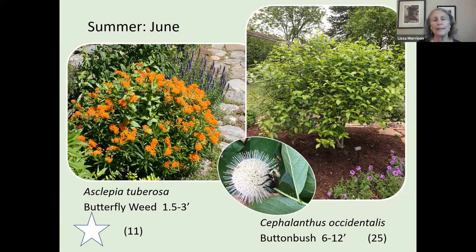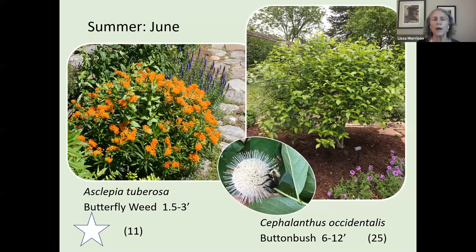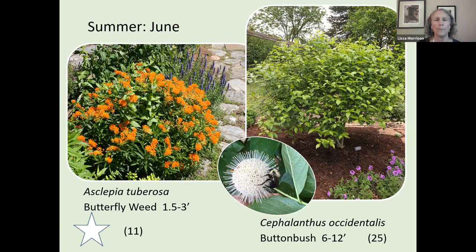When I have enough butterfly weed established, I'll start pruning mine to get tender foliage, because when monarchs come through in the fall, they prefer tender foliage. By fall the leaves become woody and tough, and monarchs will find something more tender if they can. That's why it's good to prune it after blooming so it comes back with tender foliage.